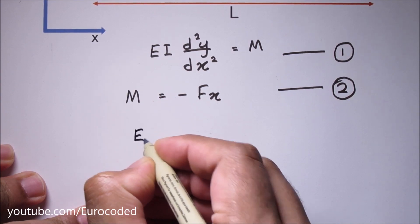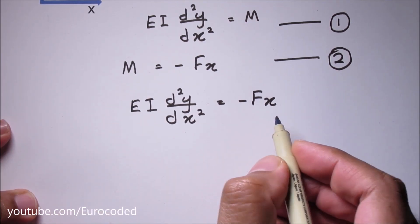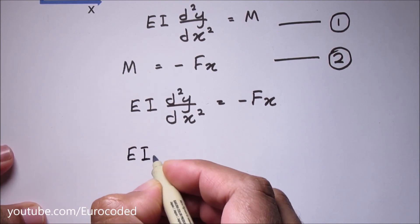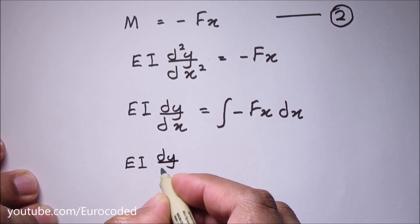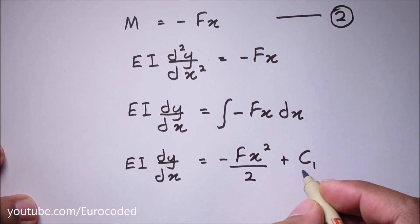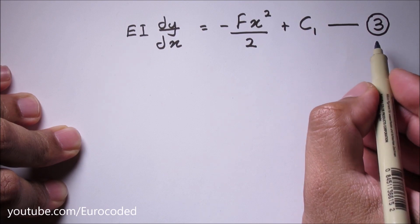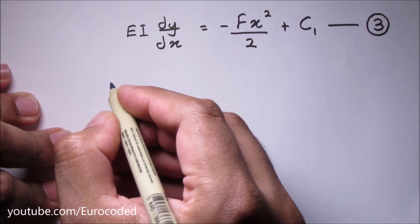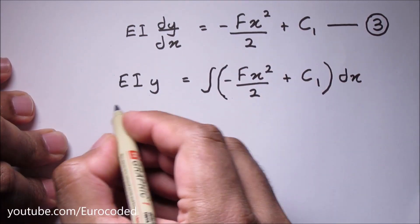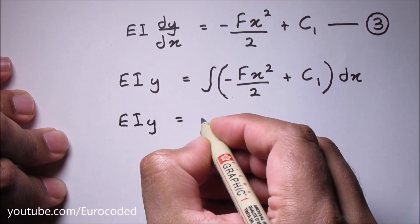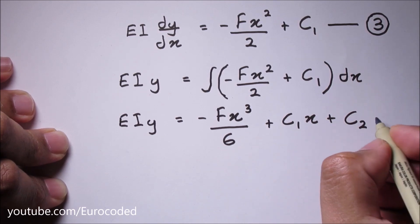If we integrate this equation with respect to x, then we can write the slope expression. C1 is a constant — let's call this equation number 3. If we integrate equation 3 with respect to x we can write the deflection expression. C2 is a constant — let's call this equation number 4.